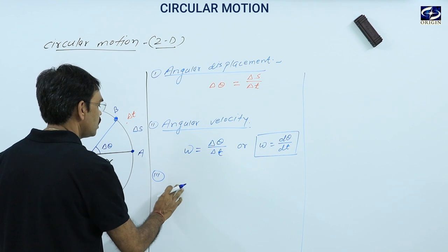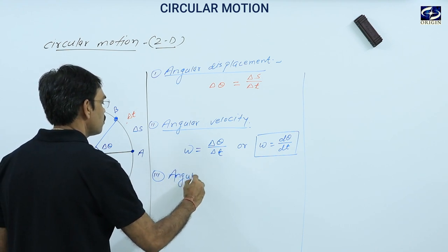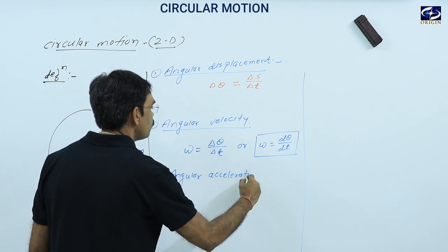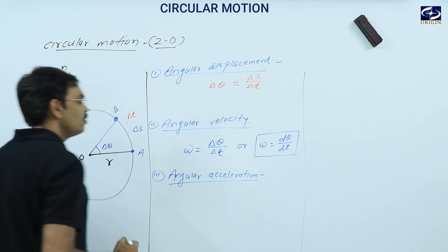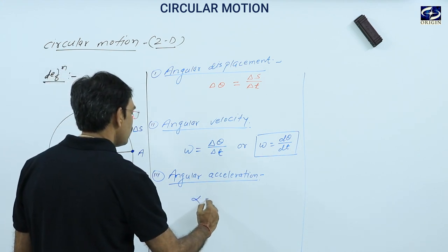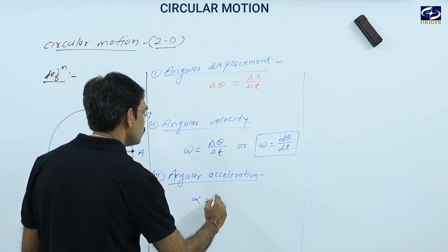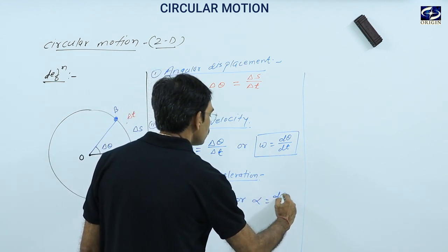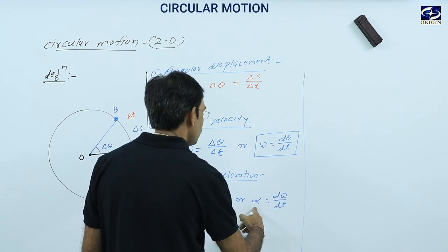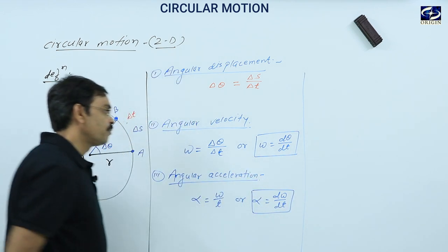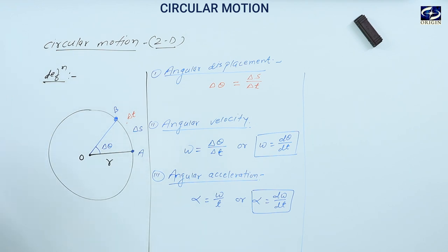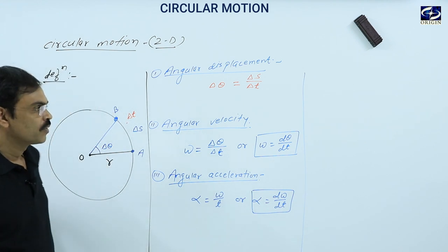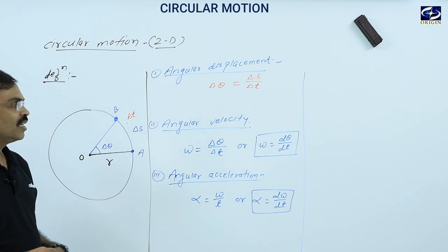The third terminology is angular acceleration. Angular acceleration is represented by alpha. Alpha equals del omega upon del T, or in calculus language, alpha equals D omega by DT. So these are our terms: angular displacement, angular velocity, and angular acceleration.